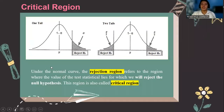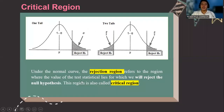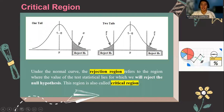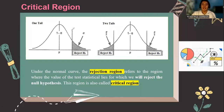Under the normal curve, the rejection region refers to the region where the value of the statistical test lies for which we will reject the null hypothesis. This region is also called the critical region. The region is separated by the critical value, represented by vertical lines. For a one-tailed test such as a right-tailed test, alpha is located on the right tail of the distribution, and it represents where we reject the null hypothesis.